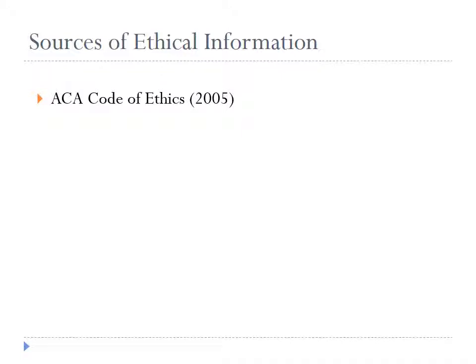The most prominent source of ethical information is the ACA Code of Ethics, created by the American Counseling Association. Roughly every ten years, a new version emerges. The ACA Code of Ethics is a collaboration of members throughout the organization — a special committee is formed to revise the standards and code, and feedback is sought from members of the organization.